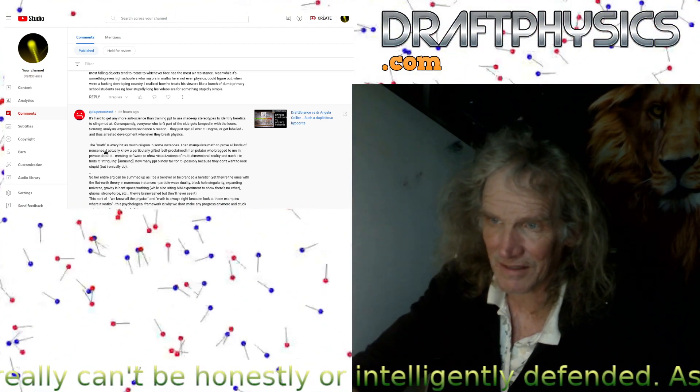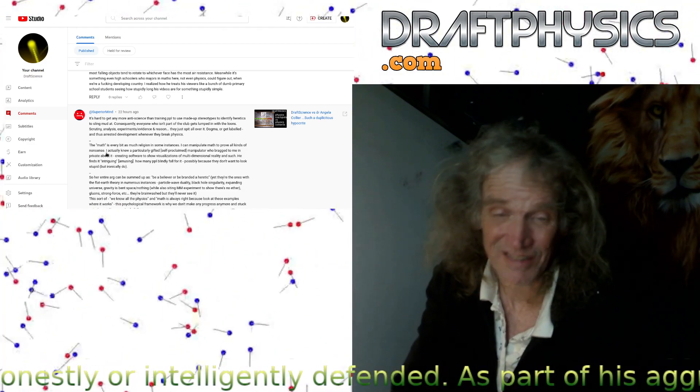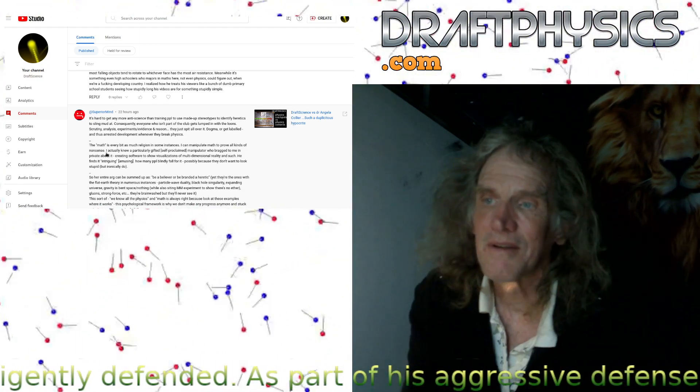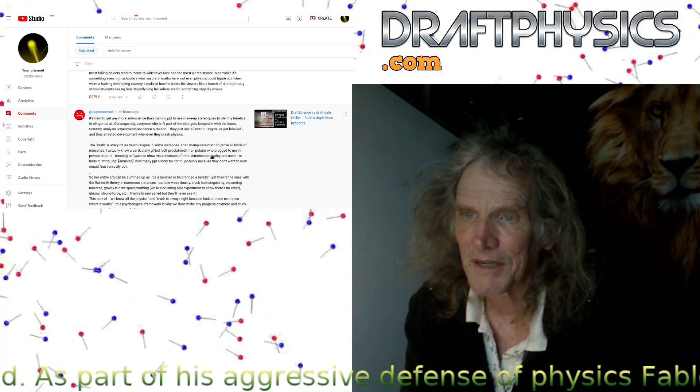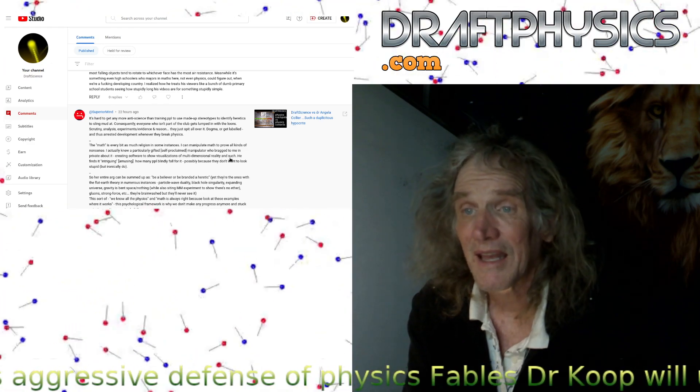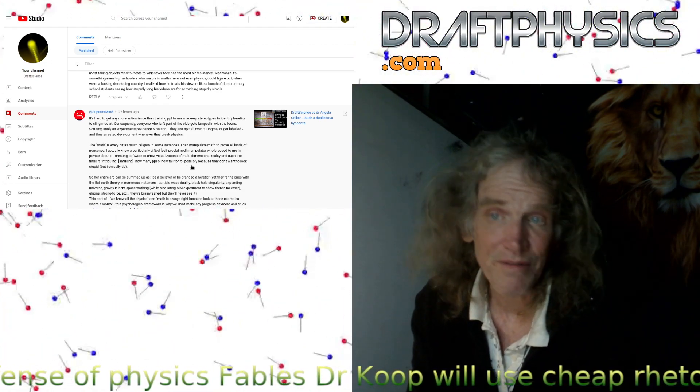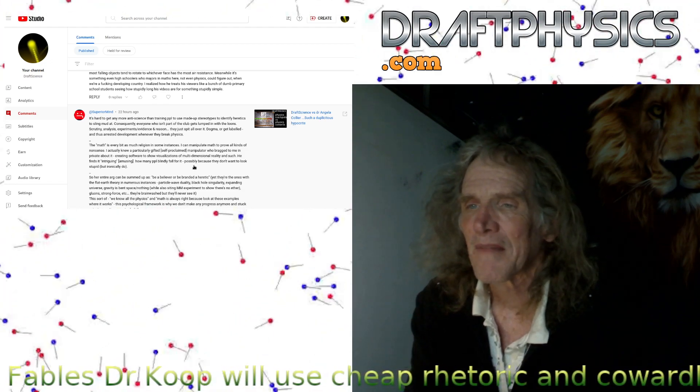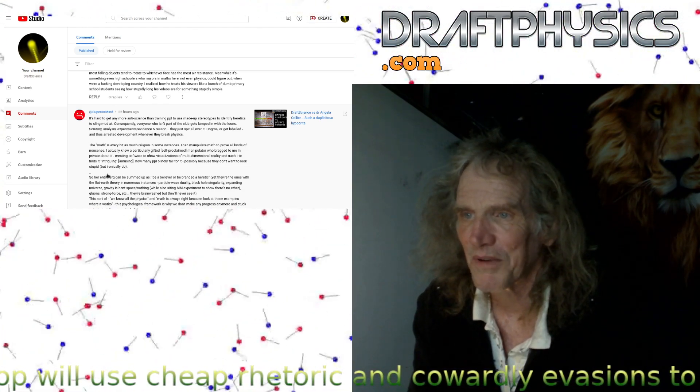That's not what a velocity is in its actual function. In its function it's just a length of line in a direction. It's not a distance over a time. It's a line in a direction. I actually knew a particularly gifted self-proclaimed manipulator who bragged to me about creating software to show visualizations of multidimensional reality. He finds it intriguing and amusing how many people blindly fall for it. The whole blender images, people fall for the stupid donut fake image, the 17 months to make image, possibly because they don't want to look stupid, but ironically do.